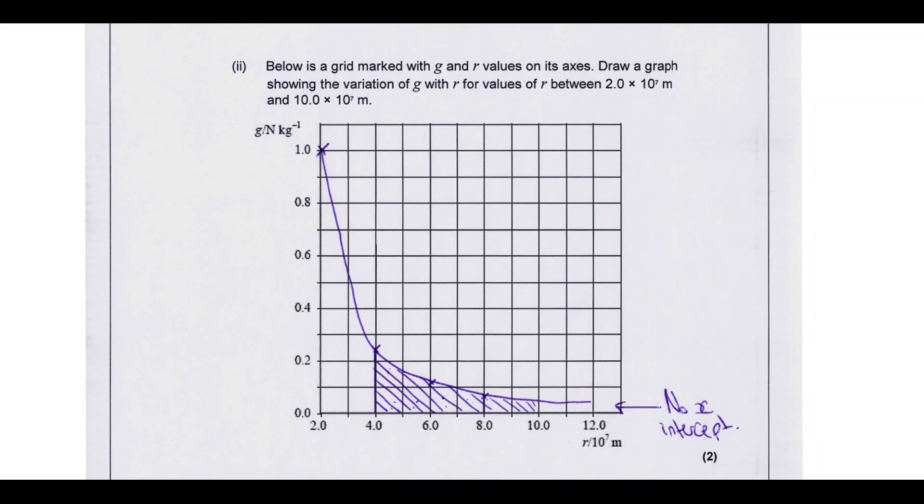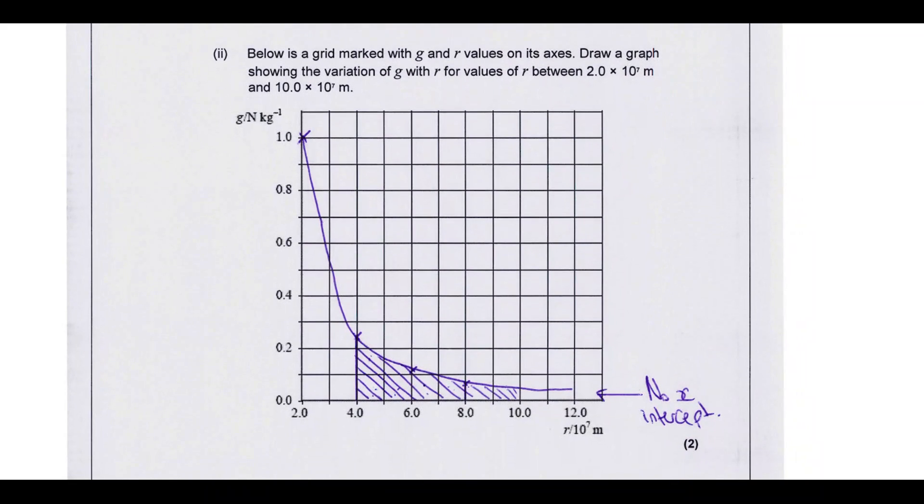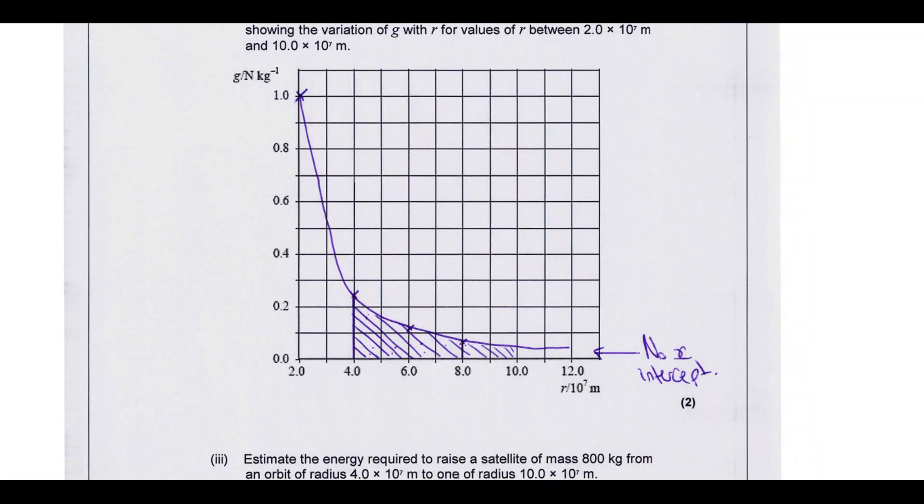Then just a case of plotting your values on a graph and drawing a line. Nothing too difficult there. Yeah, should be fairly straightforward. A few people lost marks here because they showed it crossing the x-axis. It's not. It's just decreasing over time. It's never going to hit the x-axis.